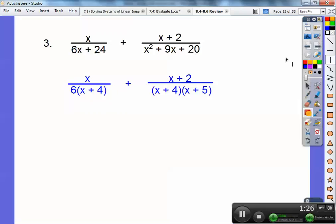Remember, least common denominator is most of every factor. I see a 6, I see an x plus 4, I see another x plus 4 that's included from this one over here, and an x plus 5. So my LCD is going to be 6, x plus 4, x plus 5.